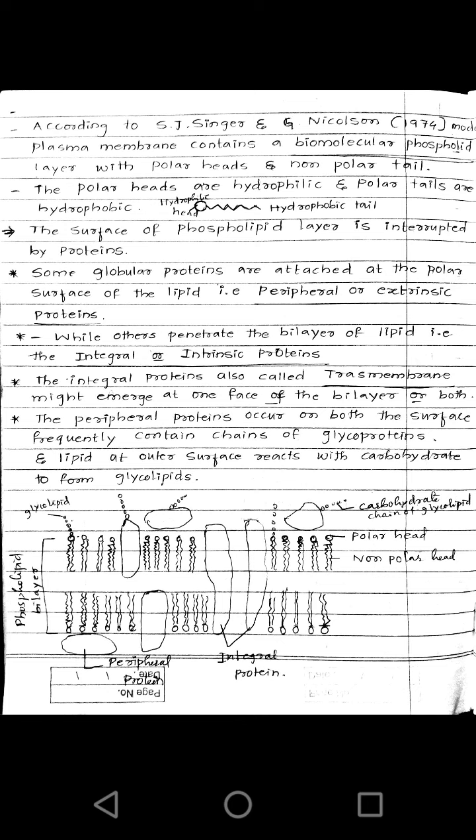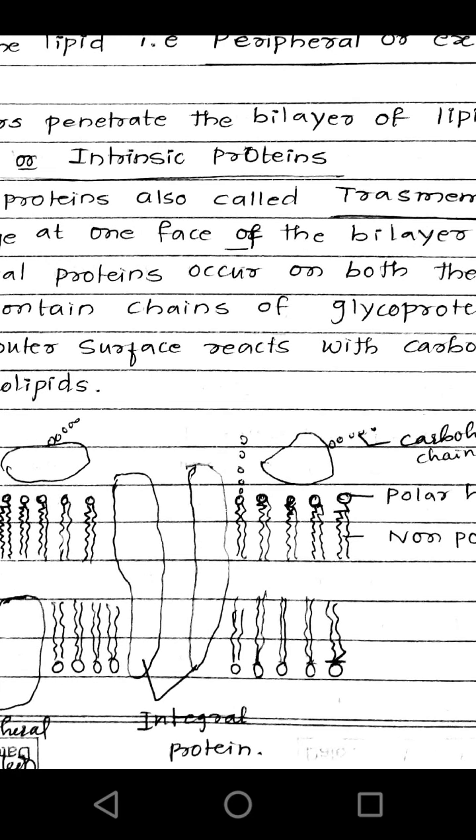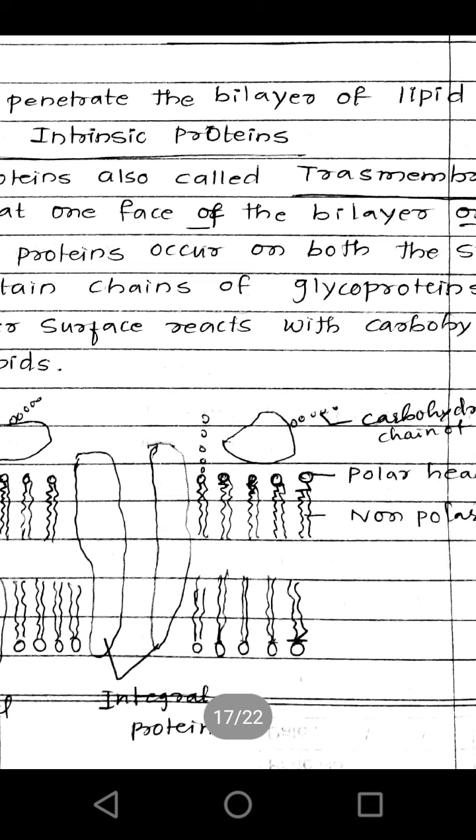Peripheral proteins or extrinsic proteins are loosely attached. Integral proteins, also called intrinsic proteins, penetrate the phospholipid bilayer — they are partially or completely embedded inside the phospholipid bilayer. The phospholipid bilayer consists of a hydrophilic head and hydrophobic tail, where the tails face each other and the heads are away from each other.